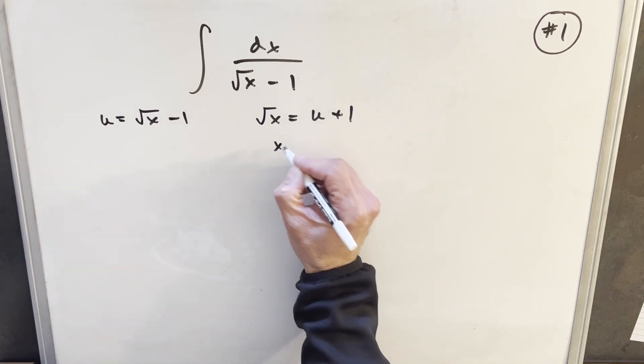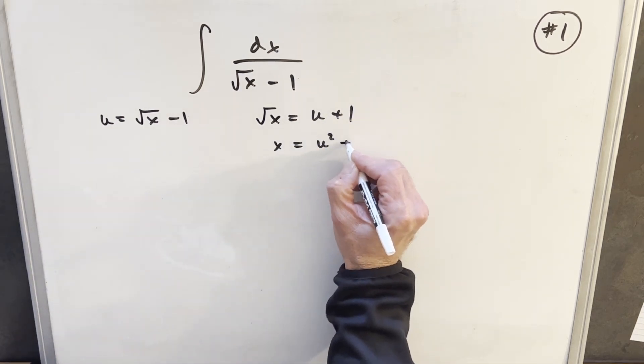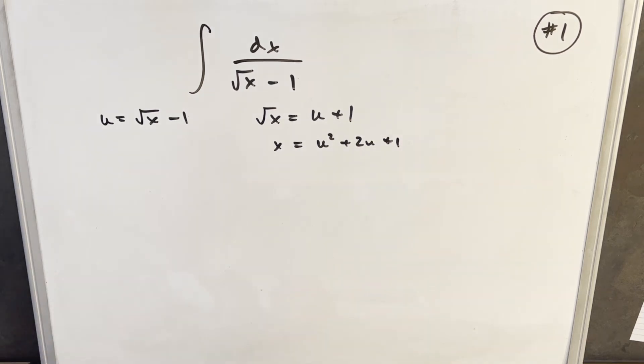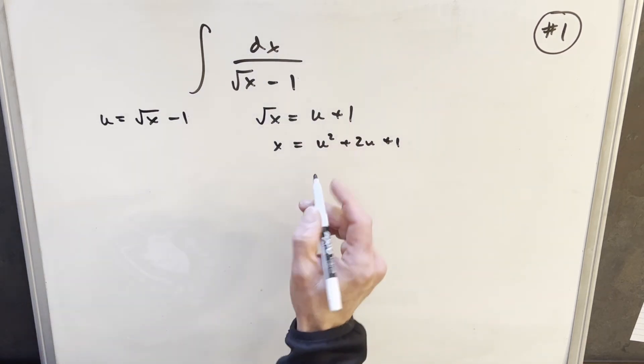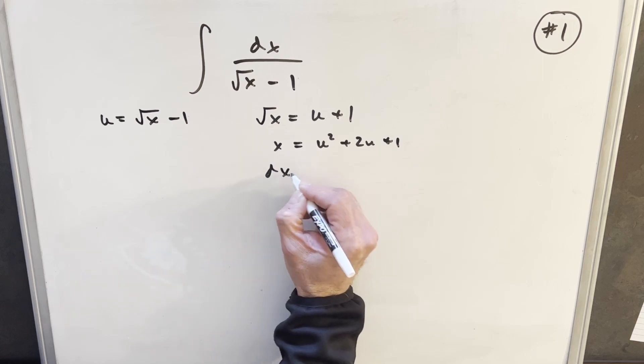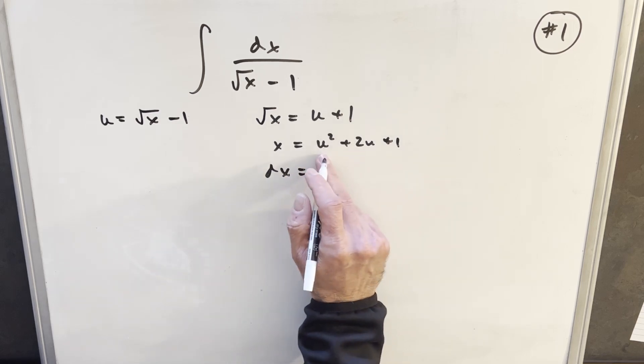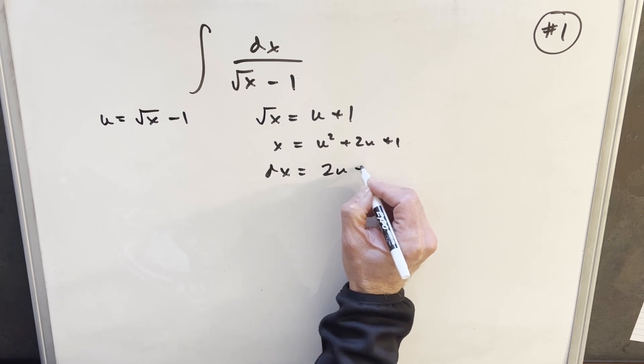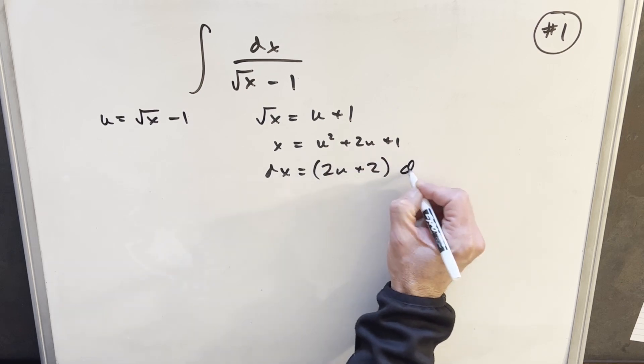If I square both sides, then x equals u squared plus 2u plus 1. Then I can take a derivative to find dx. Using the power rule, dx equals 2u plus 2 du.